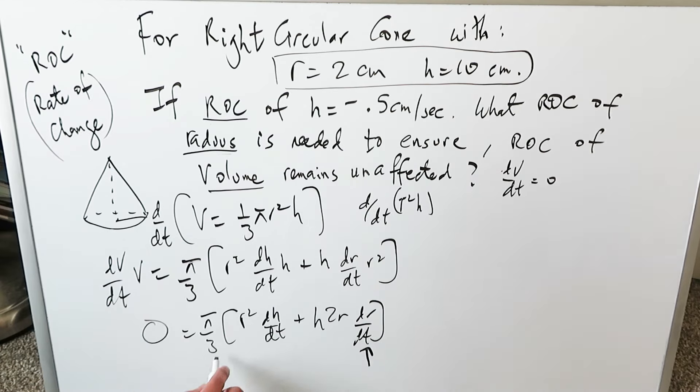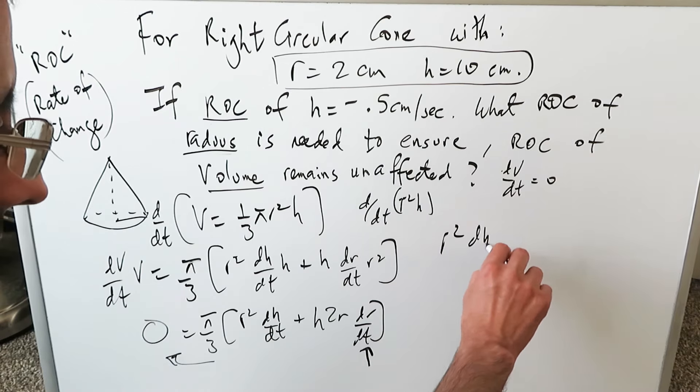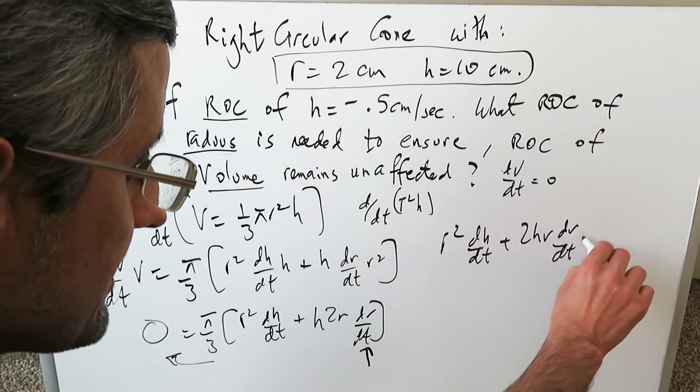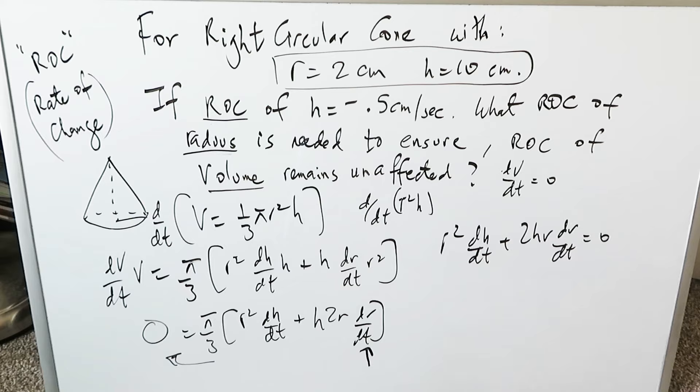You can push the π over 3 on the other side and it would zero out too. Now your entire equation is r² dh/dt + 2hr dr/dt = 0, and you just plug in your knowns. You know your radius is 2, so r² will be 4.